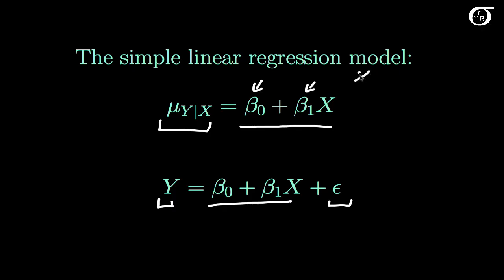Well suppose for a moment that x is equal to 0. If x is equal to 0, this term is going to drop out and we're going to get that the mean of y for a given x is equal to beta0. So beta0 is the true mean of y when x is equal to 0.